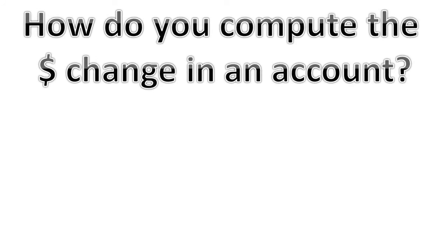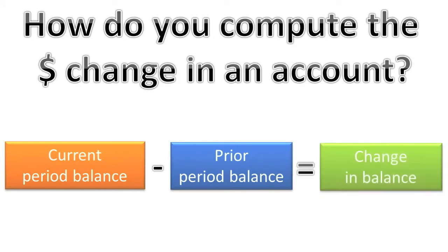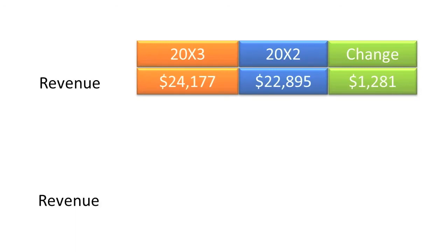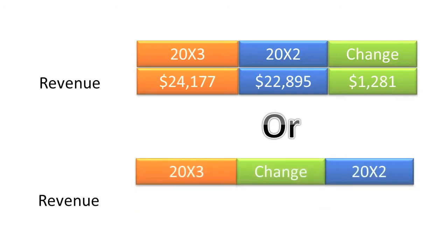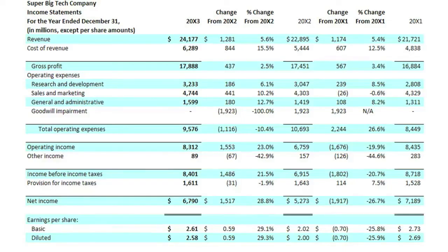Let's continue to improve the usefulness of SBTC's comparative income statement by presenting the dollar changes in each revenue and expense account from one year to the next. We can compute the dollar change of each account as follows: current period balance less prior period balance equals change in balance. For example, SBTC's revenues increased from 20X2 to 20X3 by $1,281,000,000. Depending on your preference, you might present the change in between the two years or on the side. I have included SBTC's comparative income statement with the computed dollar changes for each account.